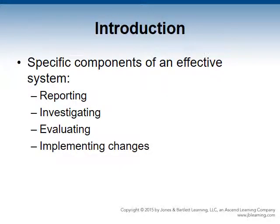Going back to the life safety initiatives, initiative number nine calls for thorough investigation of all injuries, deaths, and near misses in an effort to reduce the chances of the next one occurring. The specific components of an effective system include reporting, investigating, evaluating, and implementing changes, and we'll go into all of these in more depth.